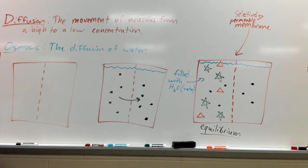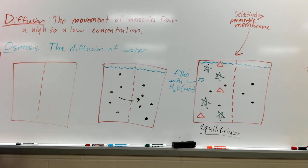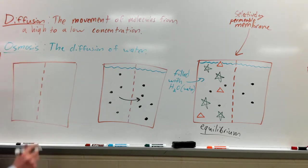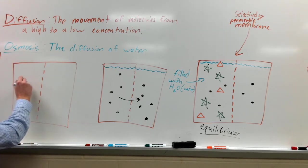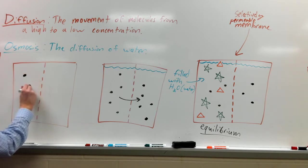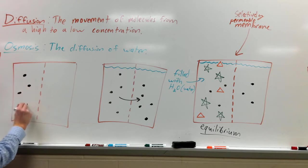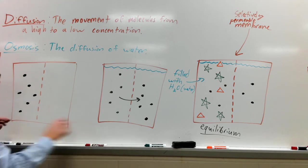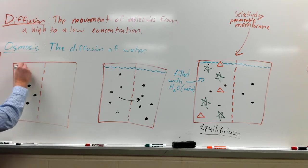Now, finally, you have osmosis, and osmosis is the diffusion of water. Water is really special, and because water is essential to all living things, we give the diffusion of water its own name — osmosis. So let's draw six black dots on the left side, and this container is submerged with water again.